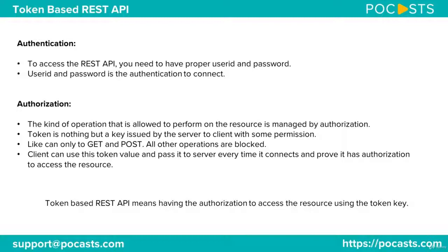Every time the client makes a connection to the server, it has to take this token and go to the server, authenticating by saying: this is my token and I have authorization to do this. The server will then verify the token and, based on the authorization, allow the type of operation requested. The token represents authorization — for example, you can only do GET or POST, and all other operations are blocked. The client passes this token value to the server every time it connects to prove it has authorization to access the resource.